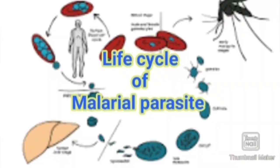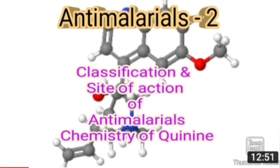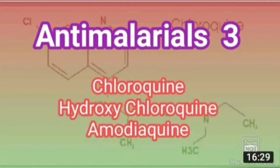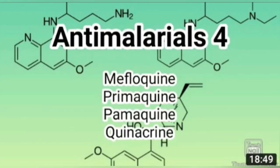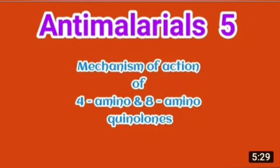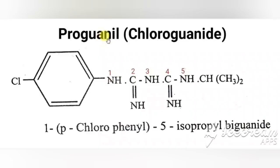This is the sixth class of anti-malarial agents. We have already seen five classes: drugs under cinchona alkaloids, 4-aminoquinolines, 8-aminoquinolines, and 9-aminoacridines. In this class, we are going to see biguanides, pyrimethamine, and atovaquone, one by one.